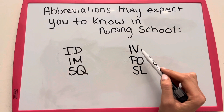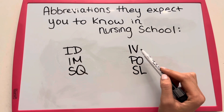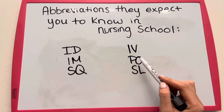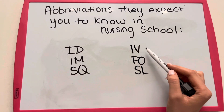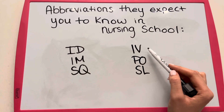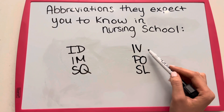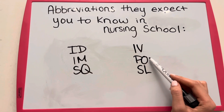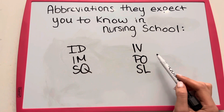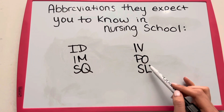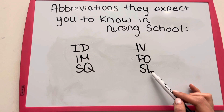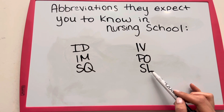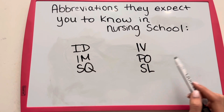Over on this side, these describe different medication routes. IV stands for intravenous, PO stands for by mouth, and SL stands for sublingual — so underneath the tongue.